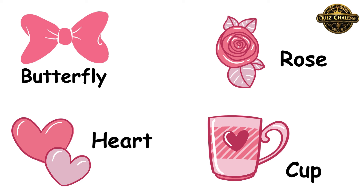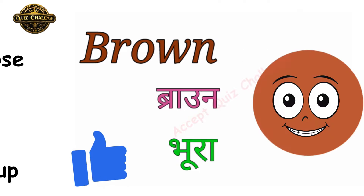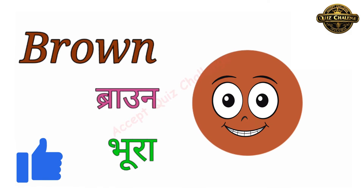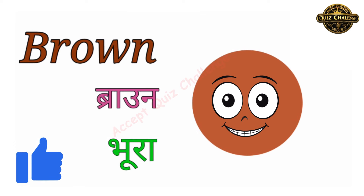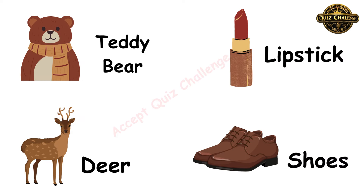This is the brown color, B-R-O-W-N. Brown means bhura. Let's see the example of brown color. Teddy bear is brown, lipstick is brown, deer is brown and shoes also is brown.